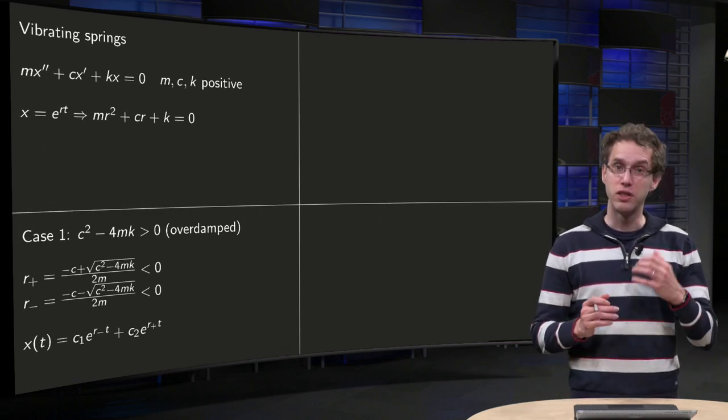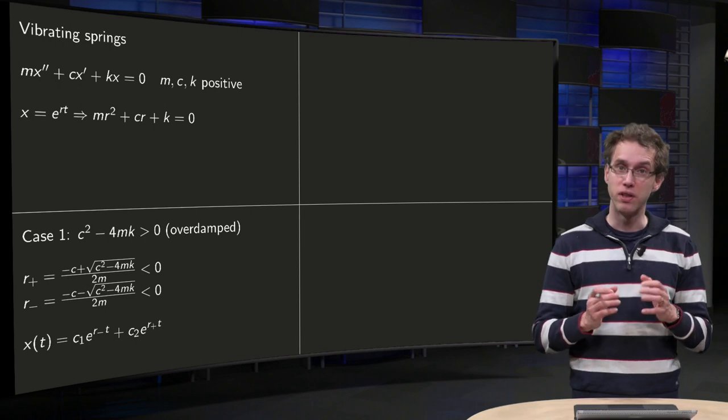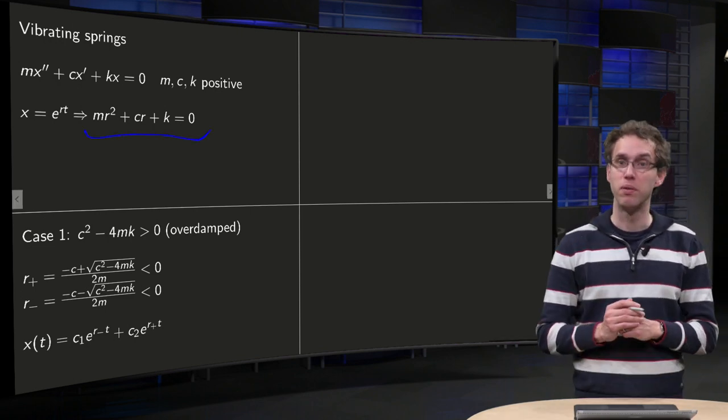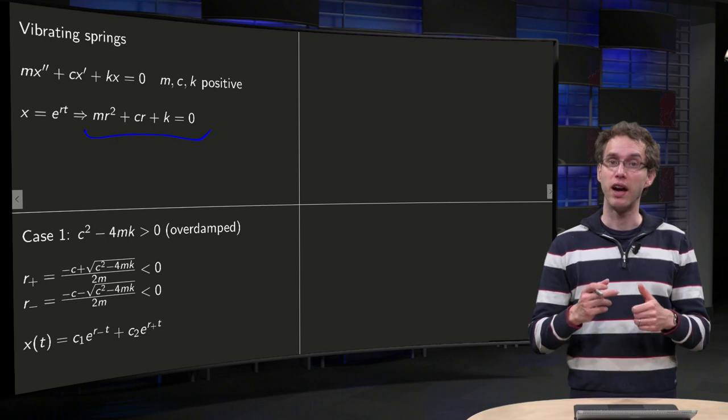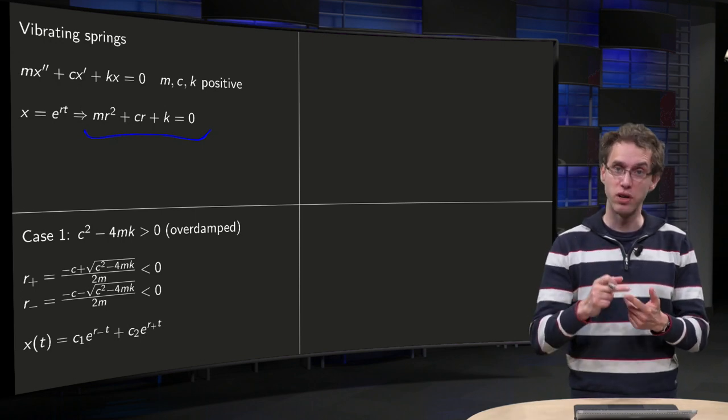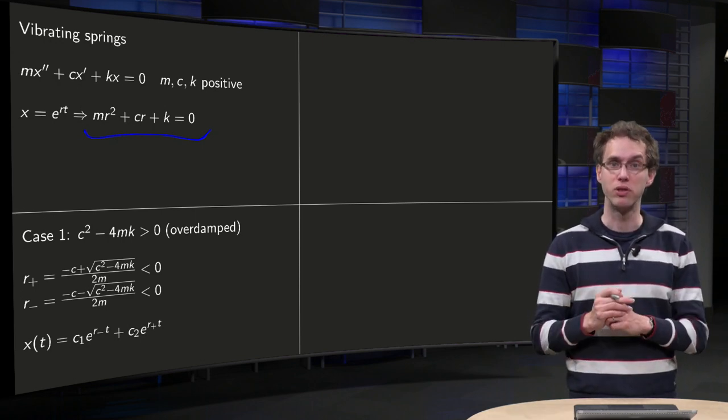The discriminant of this characteristic equation c squared minus 4mk can either be positive, zero or negative. We will look at those three cases separately.